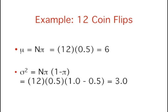Mu equals n times pi, which equals 12 times 0.5, which equals 6. Sigma squared equals n times pi times 1 minus pi, which equals 12 times 0.5 times 1.0 minus 0.5, which equals 3.0.